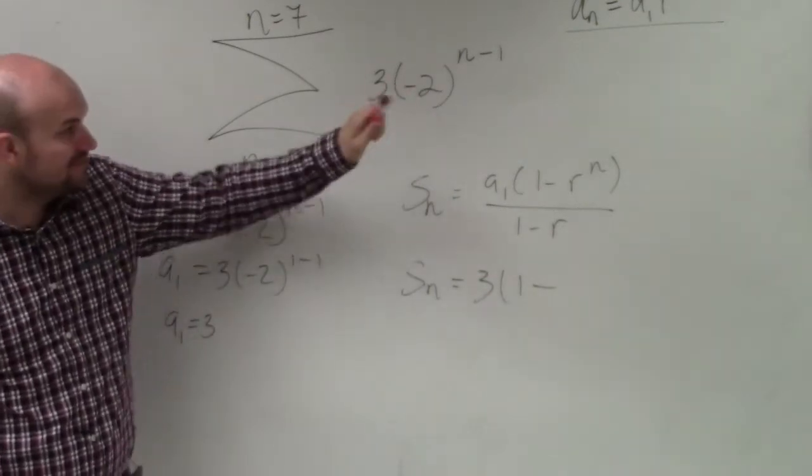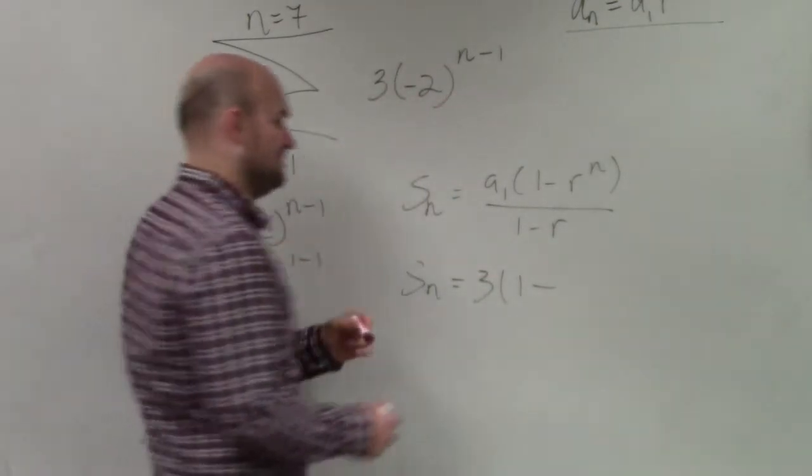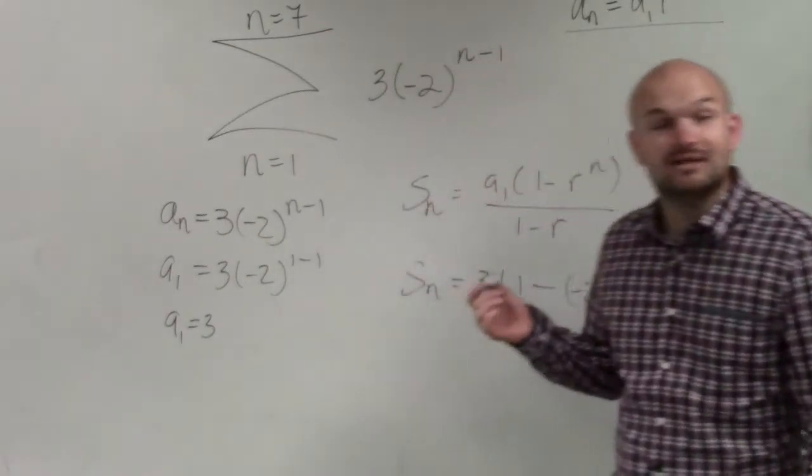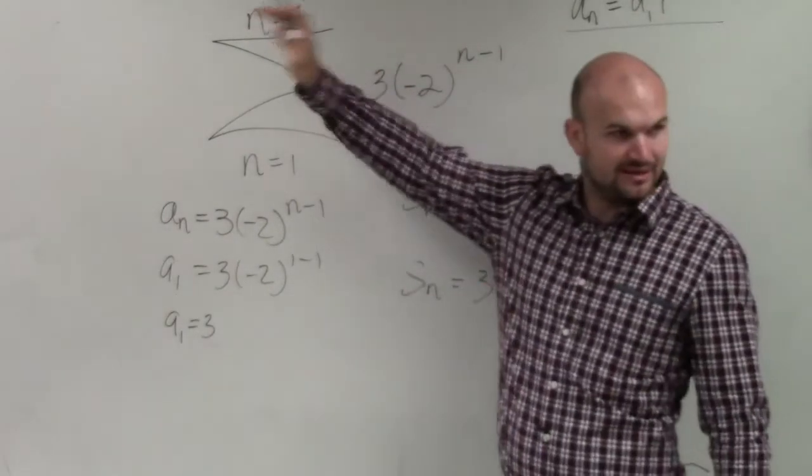So what is the base of my exponent here? Negative 2. Right here. So I'll have negative 2 raised to the n. What does n equal? It's right there. Seven.